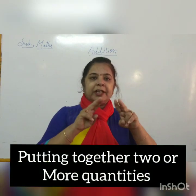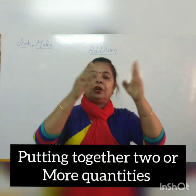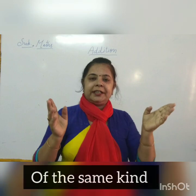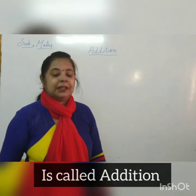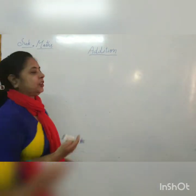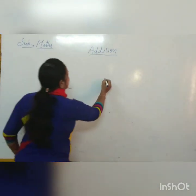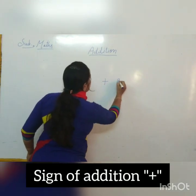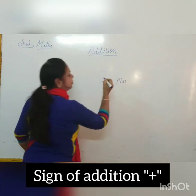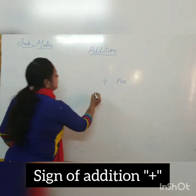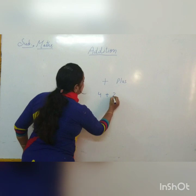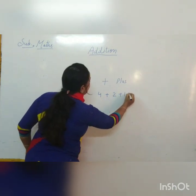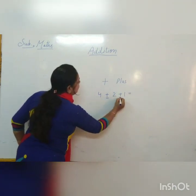Putting together two or more quantities of the same kind is called addition. The symbol used to indicate addition is plus. This is the sign of plus.